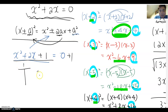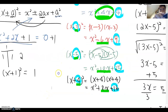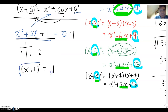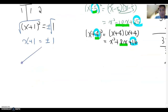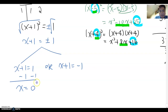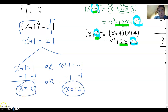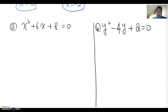Now factor this: using a chart, 1 times 1 is 1 and 1 plus 1 is 2, so it factors as (x+1)². Therefore (x+1)² = 1. Take the square root of both sides — don't forget plus and minus — giving x+1 = ±1. Since both are rational, we split into two cases: x+1 = 1 gives x = 0, and x+1 = -1 gives x = -2. Those are the answers.